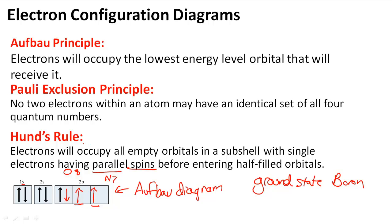So following the Aufbau principle, Pauli exclusion principle, and Hund's rule will help us draw accurate electron configuration diagrams and help us better understand how atoms bond and understand their properties.